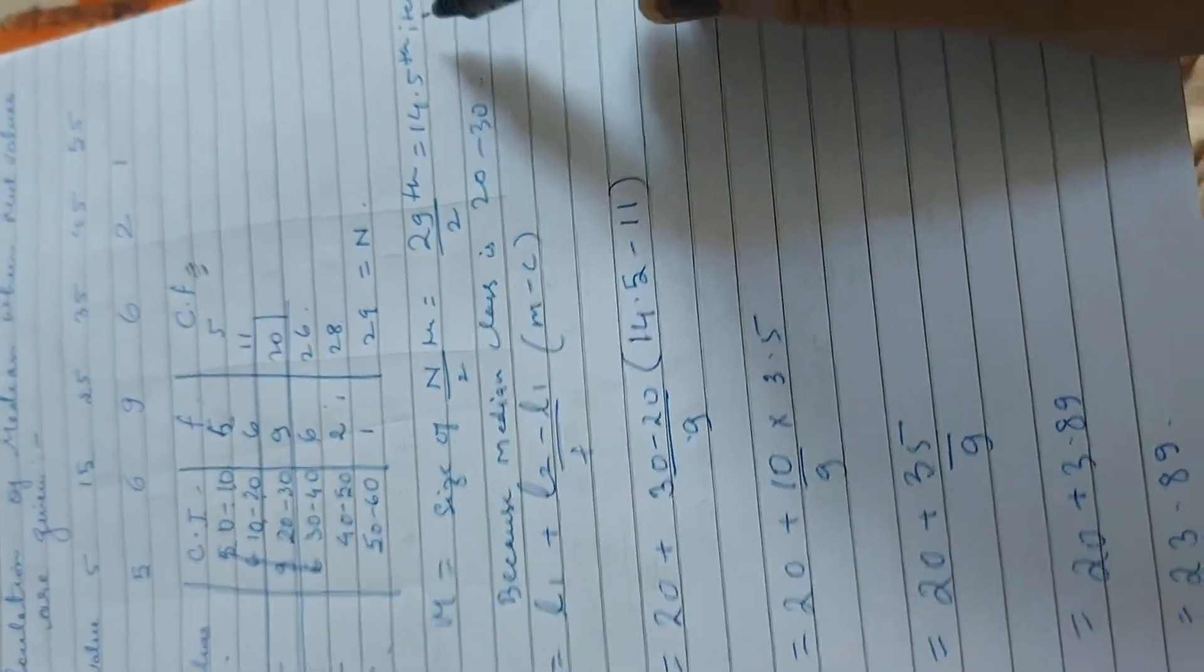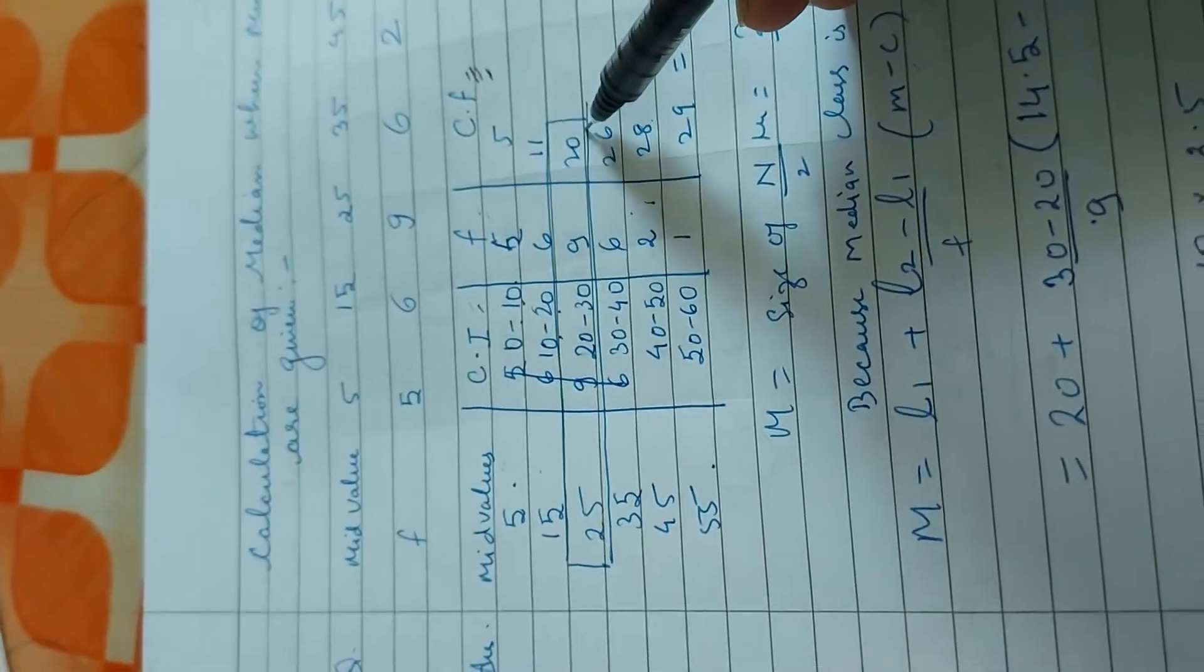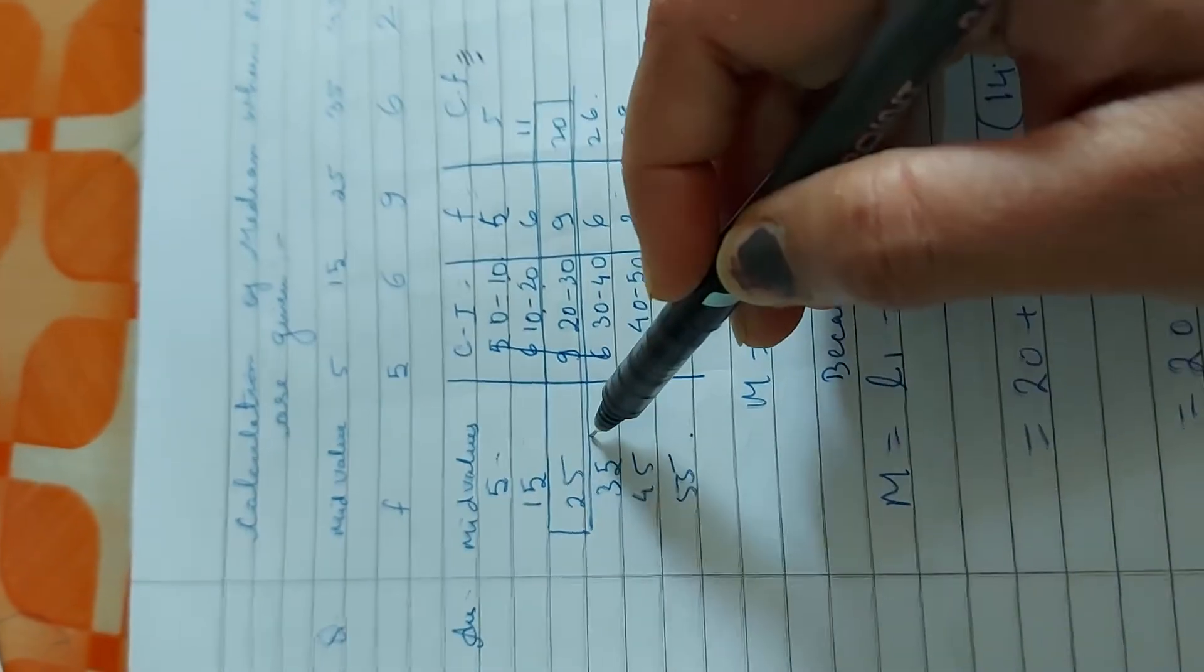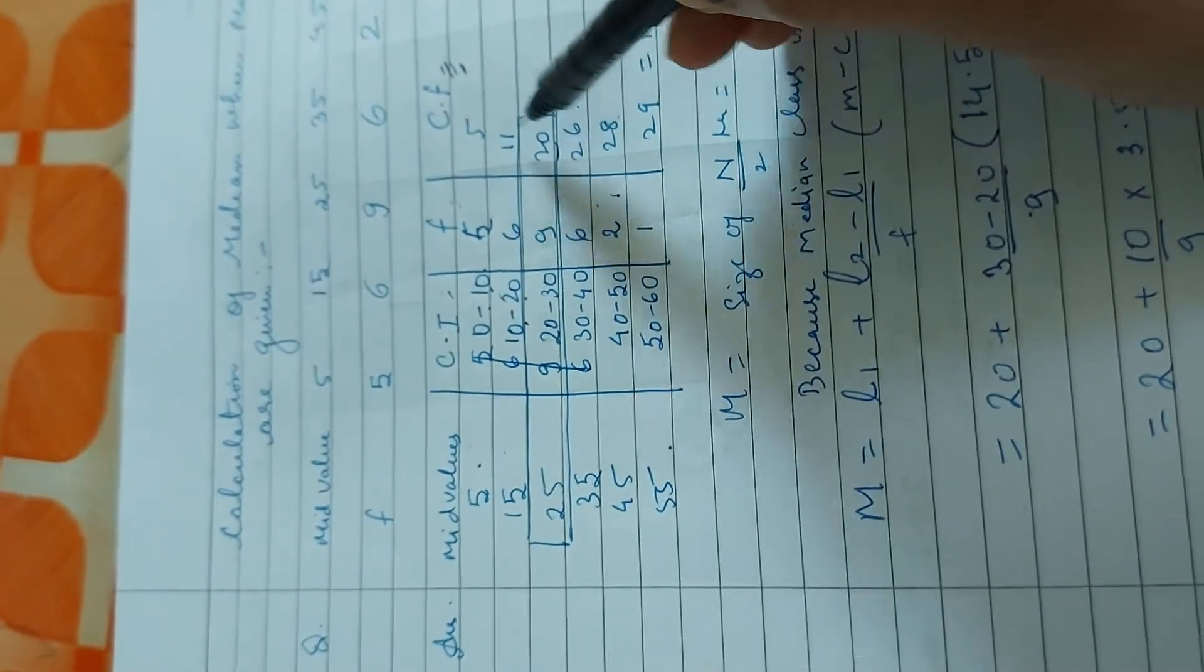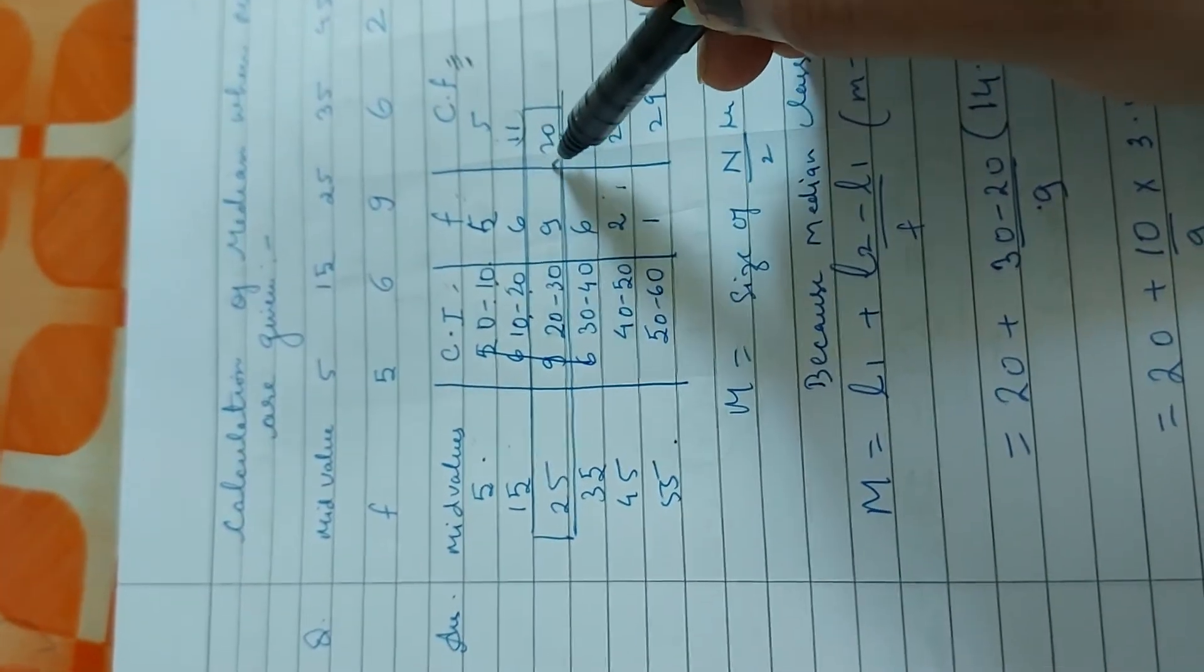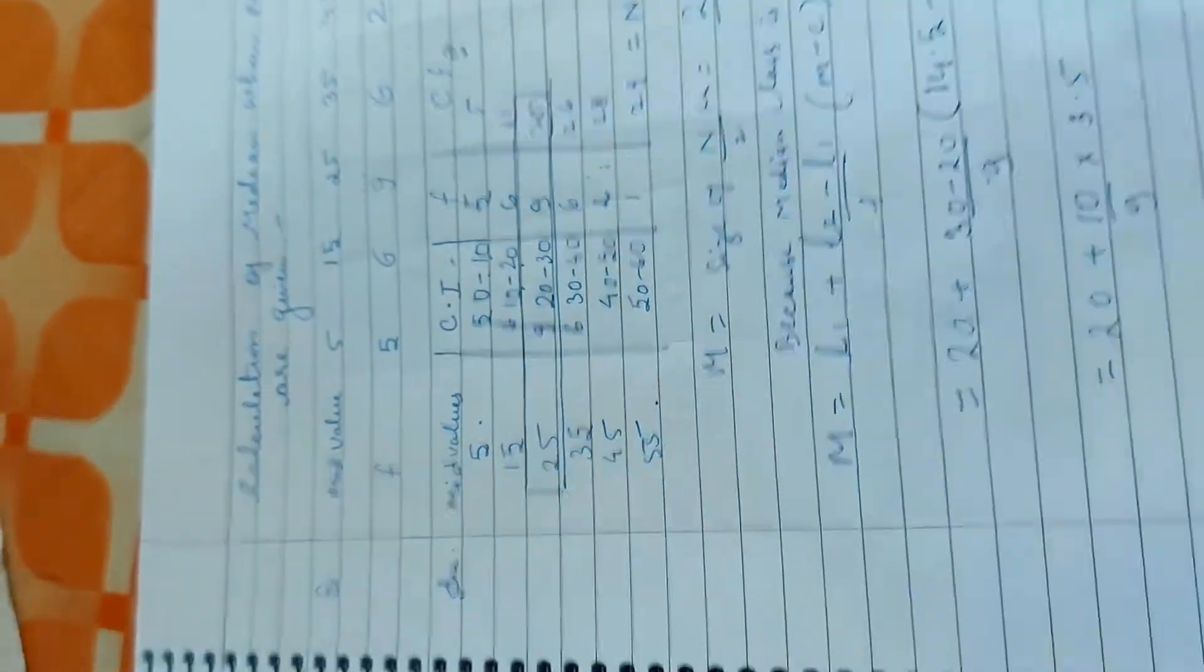We will check here which 14 will come. So we can see that our 14, because cf here is 20 and here is 11, so after 11 will come. So we'll see that our median, between the 15 and here is 14.